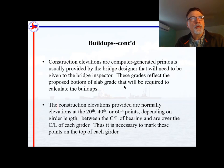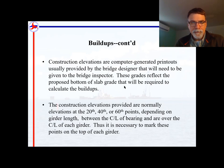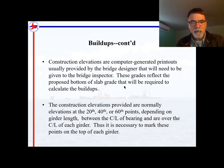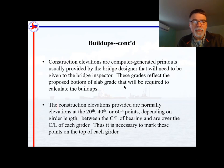One of the things you'll use to figure buildups is construction elevations — a computer-generated printout the designer provides to the bridge inspector and survey party. This gives the theoretical bottom-of-slab grades, meaning they assume the bridge has already been built, the deck is on the girders, and all deflection has come out of the system. These used to be provided at 10th points but are now provided at 20th, 40th, or 60th points. If bearing-to-bearing distance is under 100 feet, you get 20th points; 100–200 feet gives 40th points; over 200 feet gives 60th points.